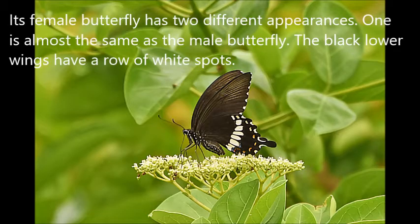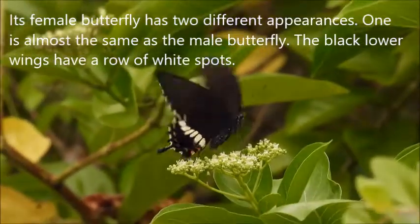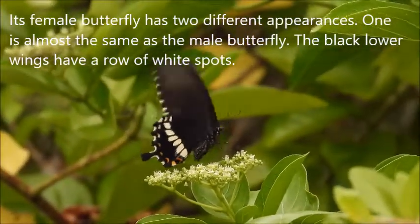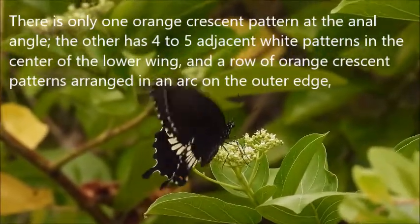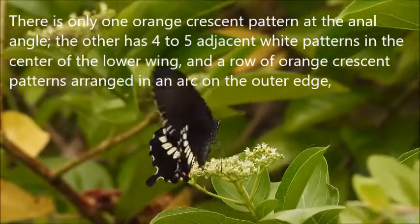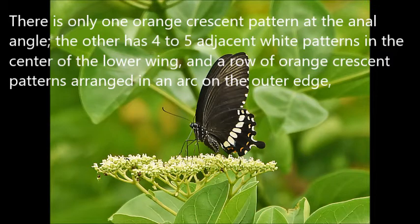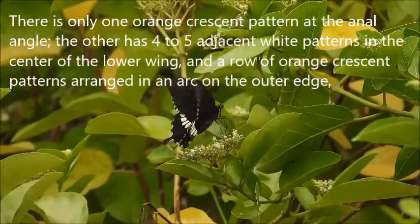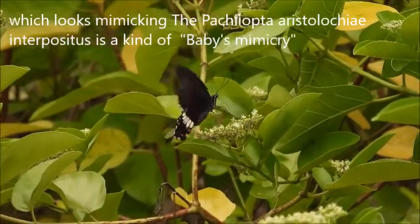The female butterfly has two different appearances. One form is almost the same as the male butterfly — the black hindwing has a row of white spots. There is only one orange crescent pattern at the inner angle. The other form has four or five adjacent white patterns in the center of the hindwing, under a row of orange crescent patterns, arranged along the outer edge, which gives it a mimicking appearance.